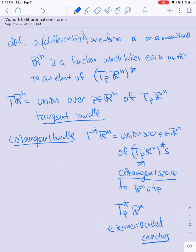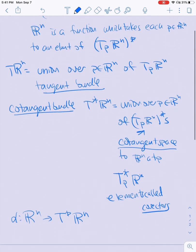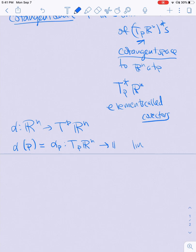Vectors are in Tp Rn; covectors are in Tp* Rn. So really what's happening is alpha is a function from Rn to the cotangent bundle T* Rn. That means that at any point P — we sometimes denote alpha at a point P by alpha(P) or alpha with a subscript P — this is a linear functional from Tp Rn to R.